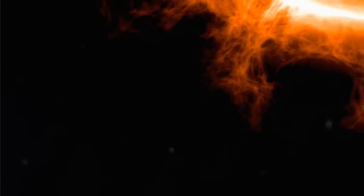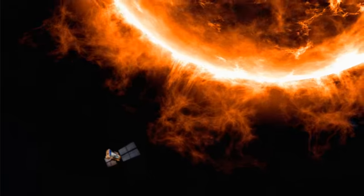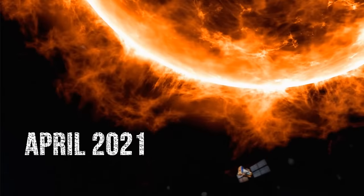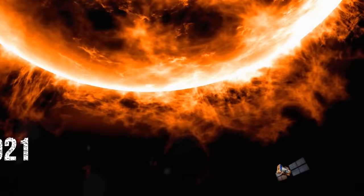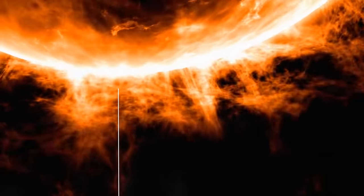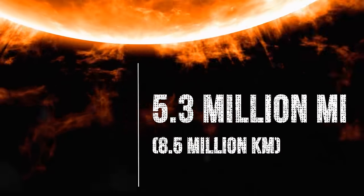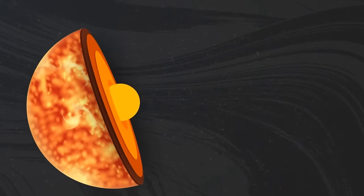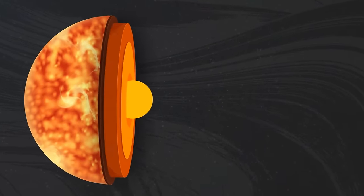After making one orbit, the space probe's engines changed the trajectory, and the probe left the orbit of Venus. It got enough acceleration to travel to the sun. And on November 5, 2018, the Parker Solar Probe made its first approach to the sun.